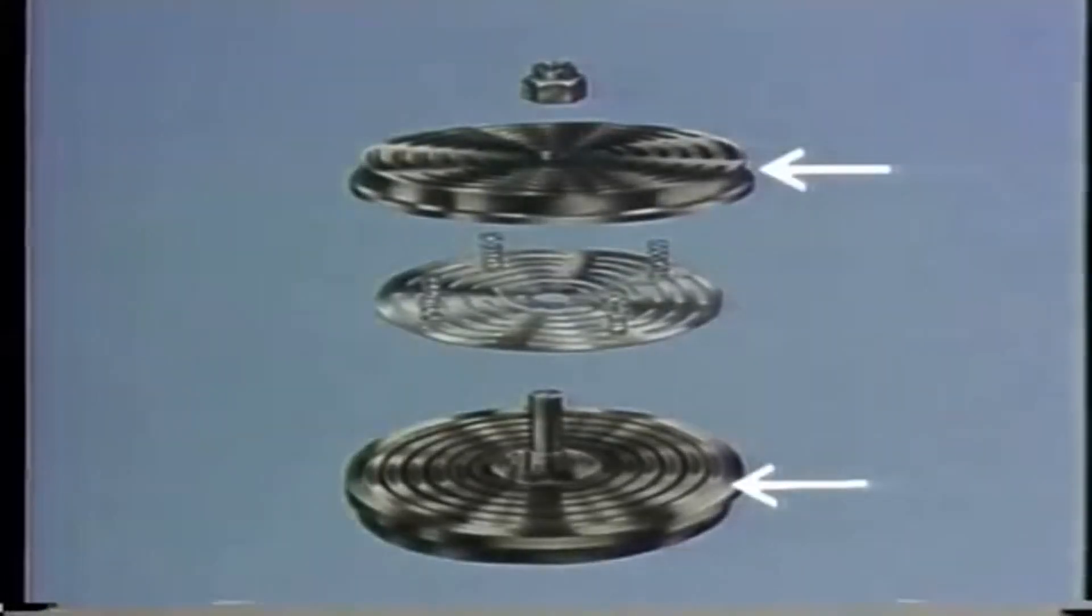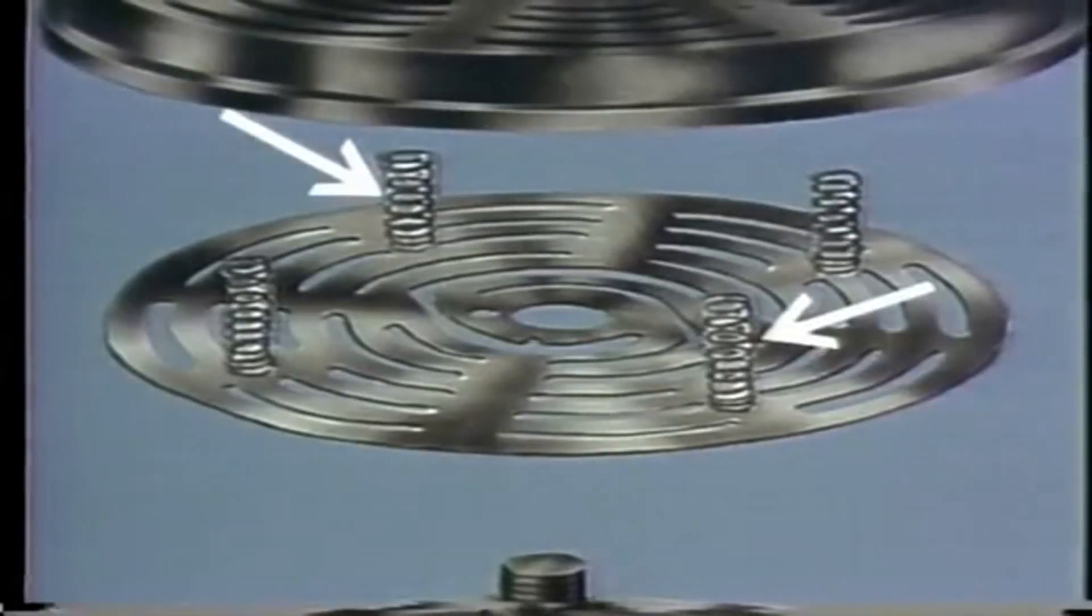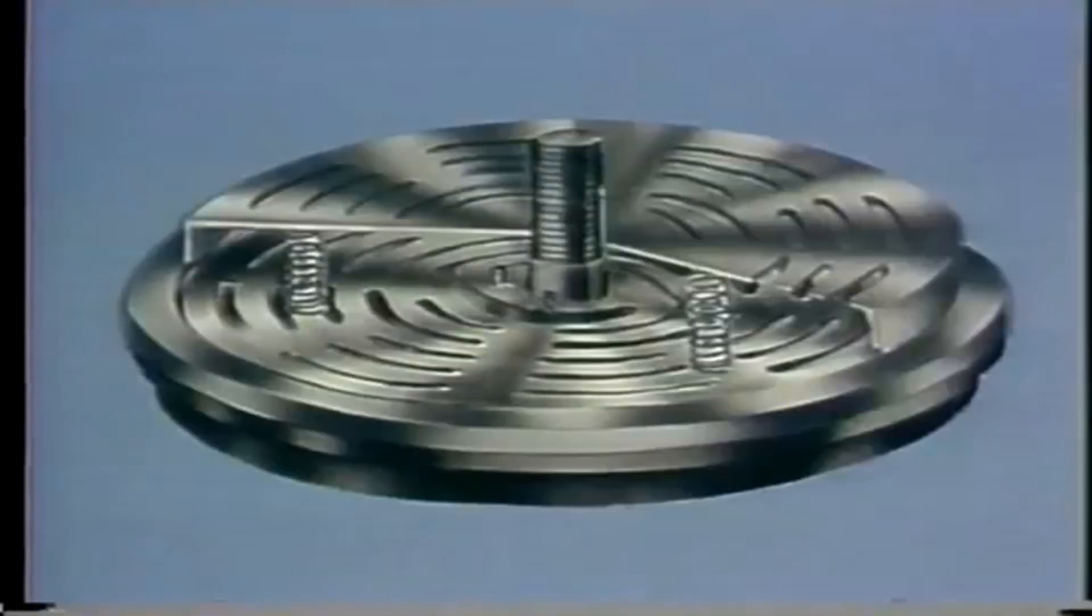Our second type of valve is the plate valve. It contains a valve seat, a guard plate, and a movable part called a valve plate. The valve plate is held against the seat by a series of coil springs. In this configuration, the air path between the inlet and the outlet is blocked.